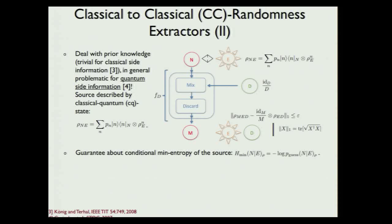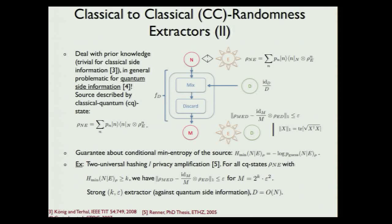We want this extractor to work if we only know something about the min entropy of the source. Because we have side information, the right measure is conditional min entropy, defined as minus log of the optimal guessing probability given the quantum side information at hand. One example is two-universal hashing — privacy amplification. It is known that for all classical-quantum states with sufficiently high min entropy, the output of the hashing is random and no longer correlated to the quantum side information, for an output size of 2^k times epsilon squared. This is called a strong k-epsilon extractor against quantum side information; the seed is of the order of the input system, which is quite bad, but better constructions are known.